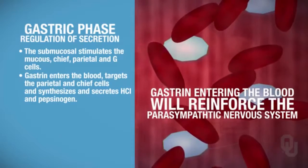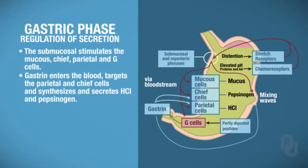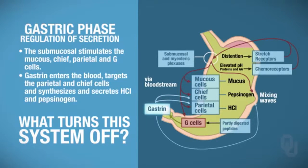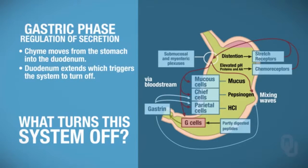This represents reinforcement of the parasympathetic nervous system, similar to the cephalic phase. G cells are also stimulated directly by partly digested peptides in the stomach, causing them to synthesize and secrete gastrin. The gastric phase turns off when chyme moves into the duodenum — distension of the duodenum triggers signals that shut this system down.